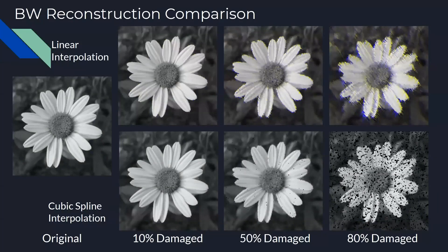Here you can see the black and white grayscale reconstruction comparison for linear interpolation and cubic spline. On the top you can see the linear interpolation compared to the cubic spline interpolation and the original image at 10 percent, 50 percent, and 80 percent damage. If you look closely, the linear interpolation loses a lot of definition and gets kind of fuzzy around the edges of harsh transitions, like from white to a darker color or black. There was also a significant blue and yellow shifting of the colors throughout the linear interpolation, especially at 80 percent damage and beyond.